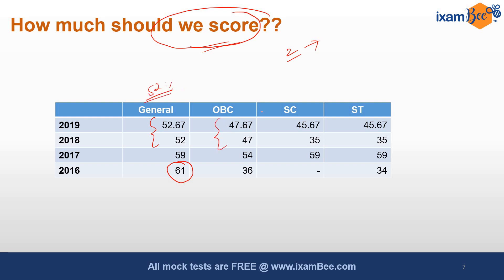For the OBC category the cutoff is around 47, and for SC category it has been around 35 to 45 over the last two years, same for ST categories. Cutoff is relative — it depends on students' performance in the paper. If the paper is easy and students score high, the cutoff goes up; if marks secured are not high, the cutoff will be low. For this year, considering the difficulty level, the cutoff might vary from 45 to 50 percent.